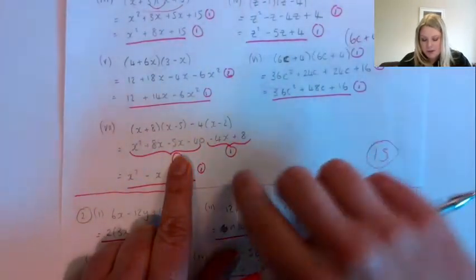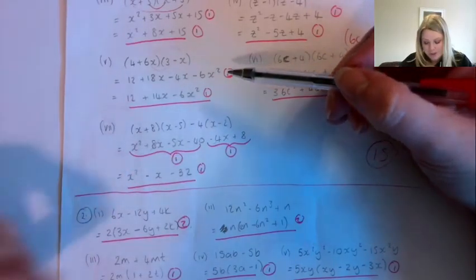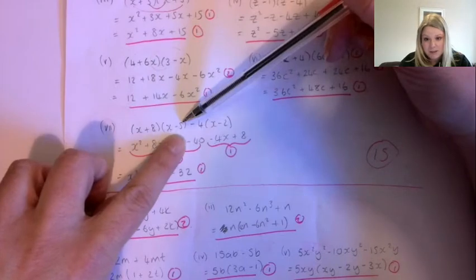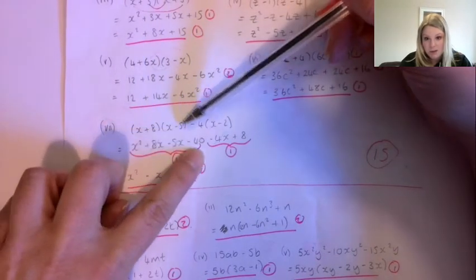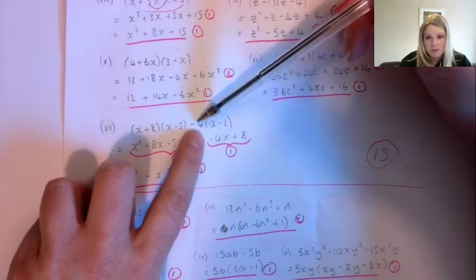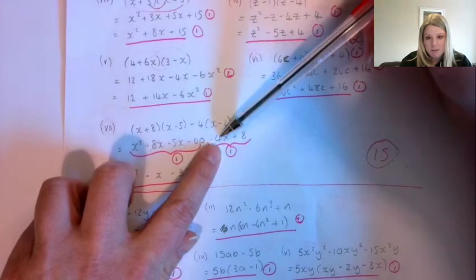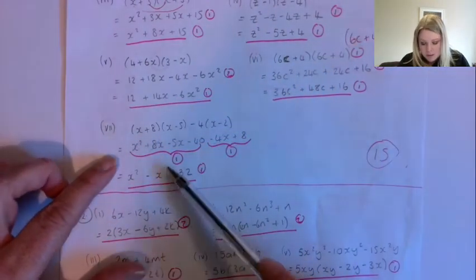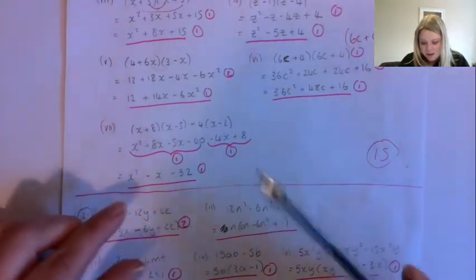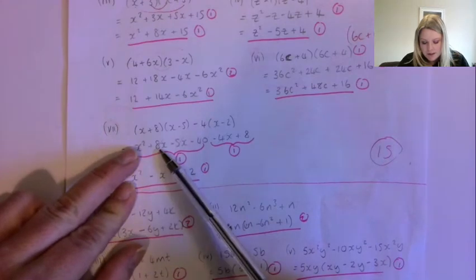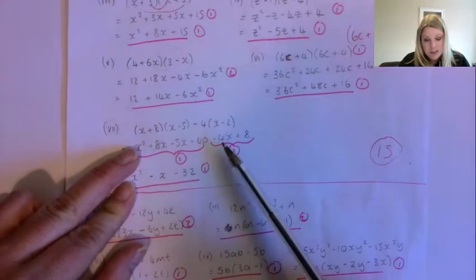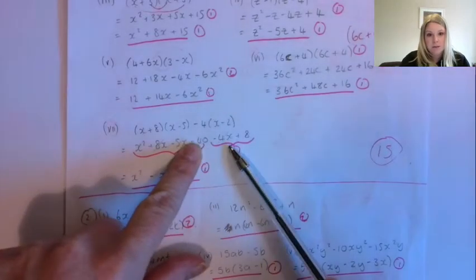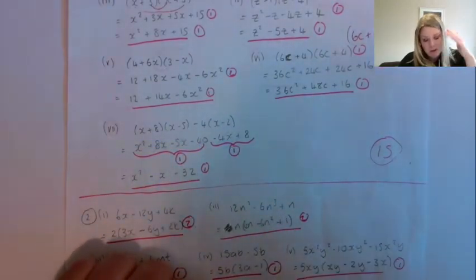For this last one, do one bit at a time. x multiplied by x gives x squared. 8 multiplied by x gives 8x. x multiplied by minus 5 gives minus 5x. And 8 multiplied by minus 5 gives minus 40. For the other bracket, everything is multiplied by minus 4: minus 4 times x gives minus 4x, and minus 4 times minus 2 gives plus 8. Then tidy up — you only have one x squared. For the x terms: 8x minus 5x minus 4x leaves minus x. For the numbers: minus 40 plus 8 gives minus 32.